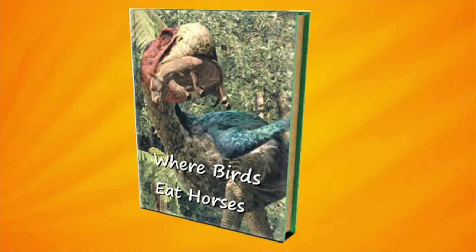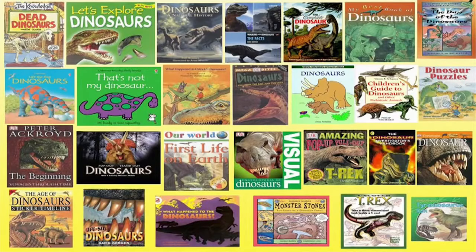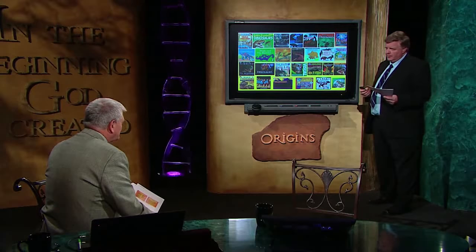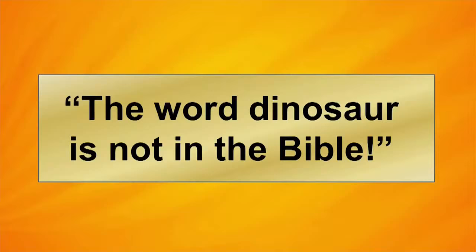Look at all these children's books about dinosaurs — every single one of these books written for children under the age of eight is an evolutionary book. They're getting a message through the use of language about evolution. And when I'm going around telling people about dinosaurs, people say, 'You shouldn't be talking about dinosaurs because the word dinosaur isn't in the Bible, is it?'